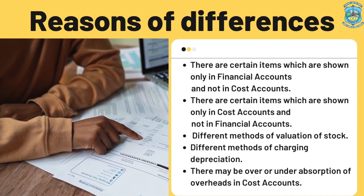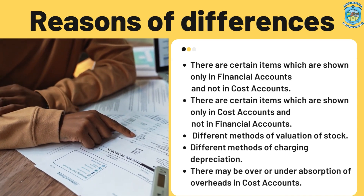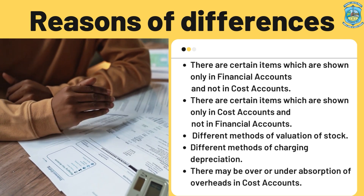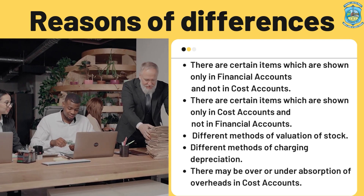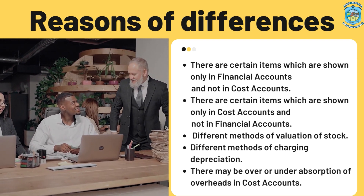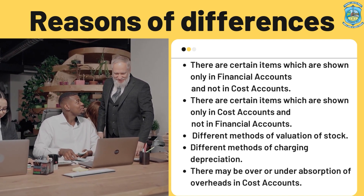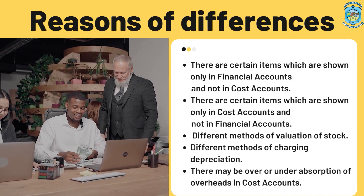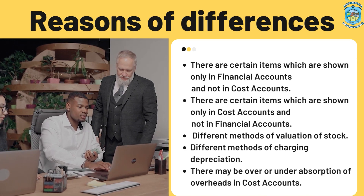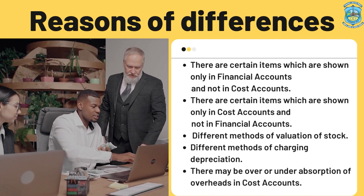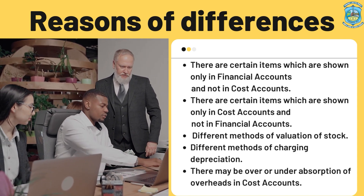Number three: different methods of valuation of stock. Different methods are adopted in financial accounting as well as in cost accounting. In financial accounting, there are two values — market price and cost price — and whichever is less, stock is valued on that basis. In the cost book, the FIFO method and the average method are used for valuation of stock.